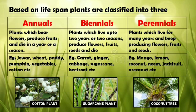Perennials are plants which live for many years and keep producing flowers, fruits and seeds. Examples include mango, neem, jackfruit, areca nut, etc. The picture shown is a coconut tree.